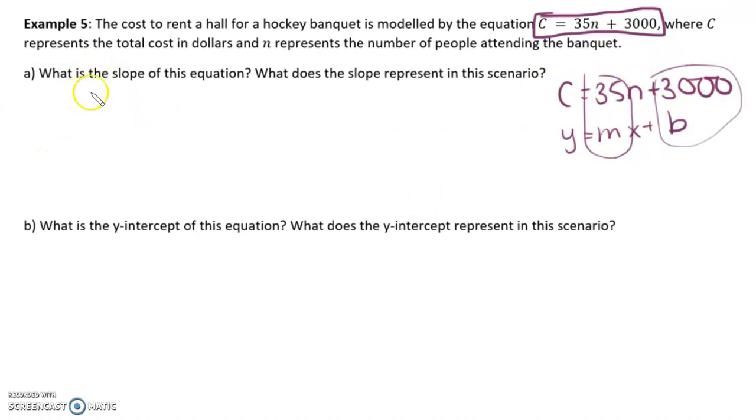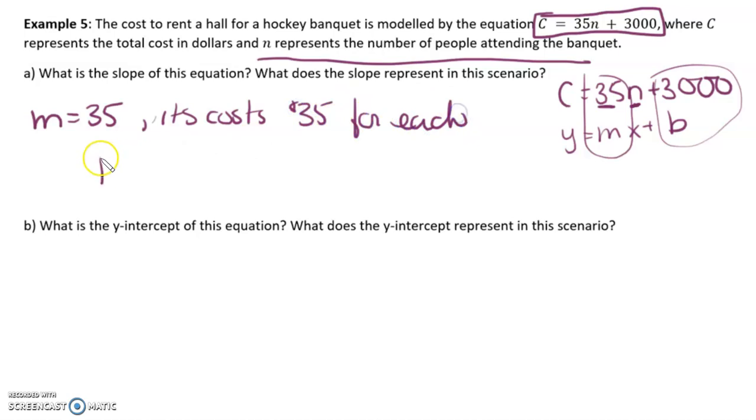Now, a, what is the slope in this equation? m equals 35 and what does it represent? Okay, so the slope is multiplied by n and n is the number of people attending. So, the slope is, it costs $35 for each person to attend.